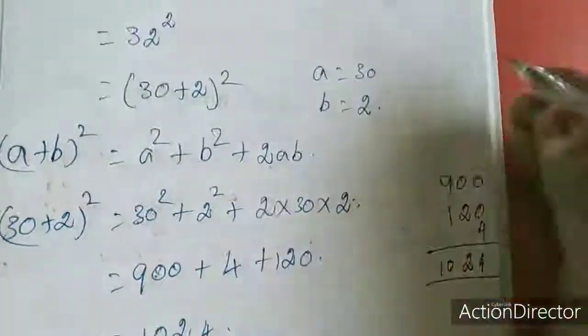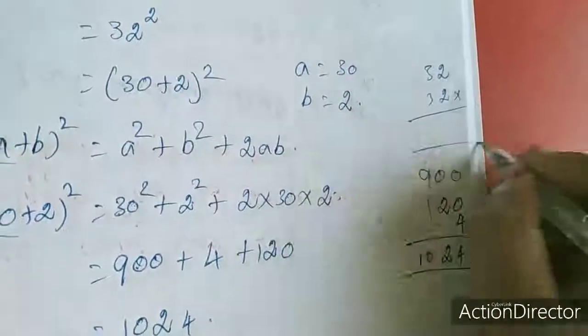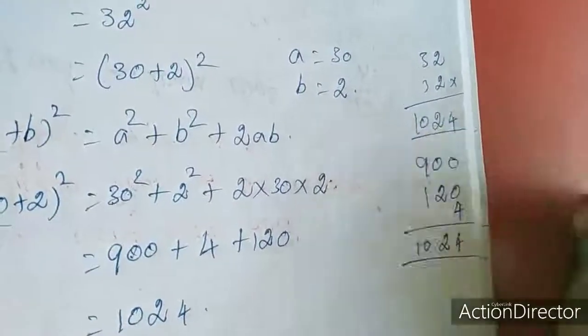This is the easiest method, or else you can multiply like this also. 32 into 32, you are getting 1024 only.